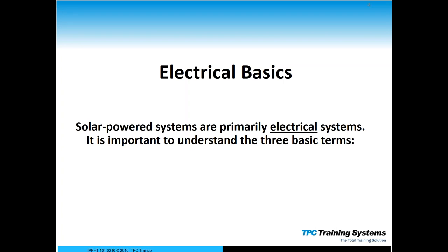Whether it be a transformer, a control panel with relays and motor starters, inverters, converters, battery systems, or our cell phones and computers — they all operate on three basic principles, and this includes solar panels. The first principle is current, which is the most fundamental basic of electricity, followed by voltage and then resistance. To fully understand solar panels, we have to understand how current, voltage, and resistance play together.